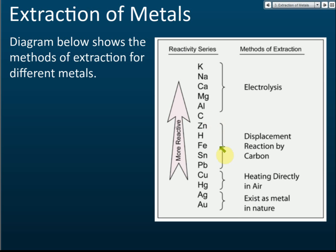This displacement-by-carbon method is important in Form 5, not Form 4, so don't worry if you don't know it yet. Now, for those metals which are higher than carbon in the reactivity series, we cannot use displacement reactions because carbon cannot displace them. So if we can't use displacement reactions, then we use electrolysis to extract these metals.